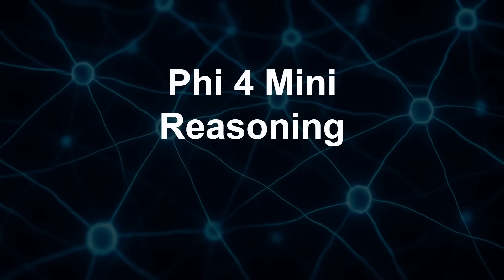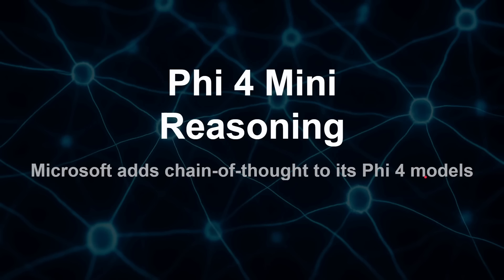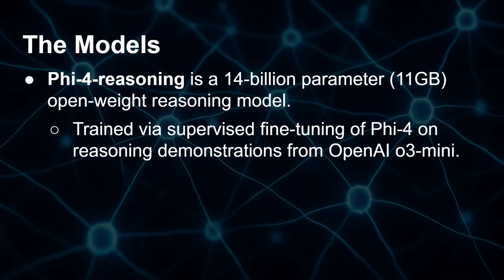Let's look at Microsoft's Phi-5.4 Mini reasoning. Microsoft has added chain of thought to its Phi-5.4 models — previously released, now we have the reasoning versions. There are three models in the series. The Phi-5.4 reasoning model is a 14 billion parameter model, requiring 11 gigabytes of RAM, trained via supervised fine-tuning of the Phi-5.4 models that already existed.